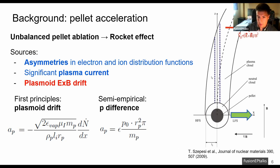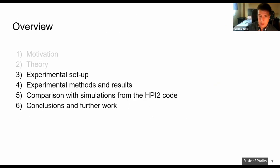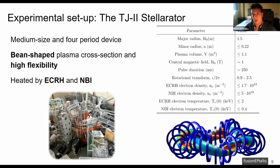Then I will continue with an explanation of the experimental setup and I use the TJ2 stellarator which is a medium-size four-period device and is characterized by a bean-shaped plasma cross section and high flexibility due to the achievement of a wide range of rotational transforms.